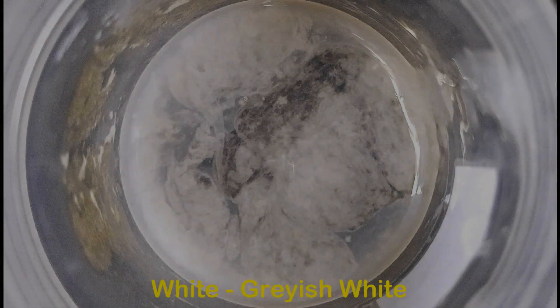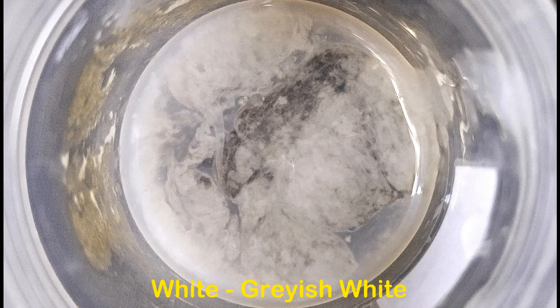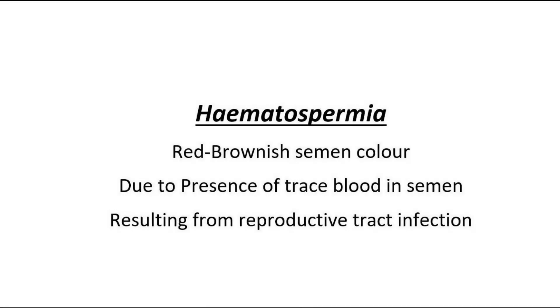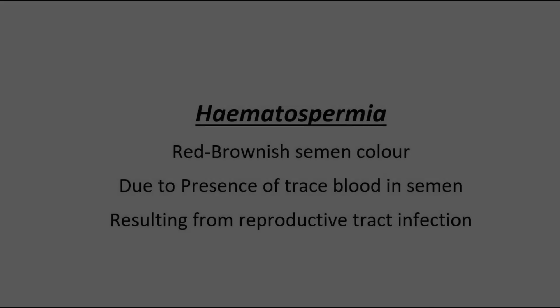The normal color of human semen is white to grayish white. Semen color is influenced by diet, age, medication, and certain underlying medical conditions. Red to brownish semen color indicates the presence of blood, a condition called hematospermia, which could be a result of infection in the reproductive tract.